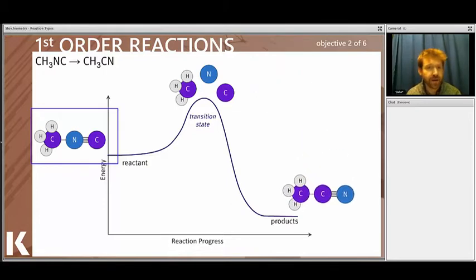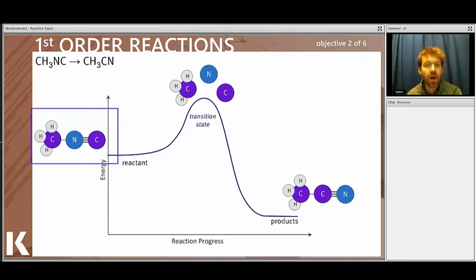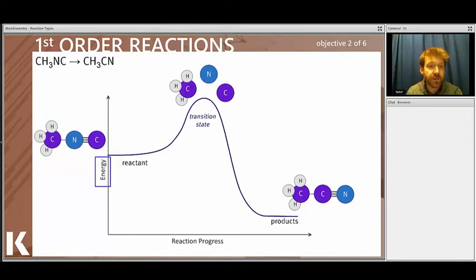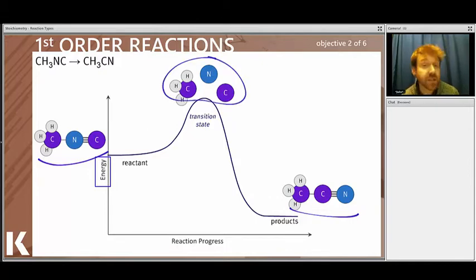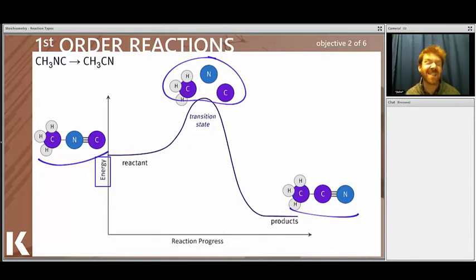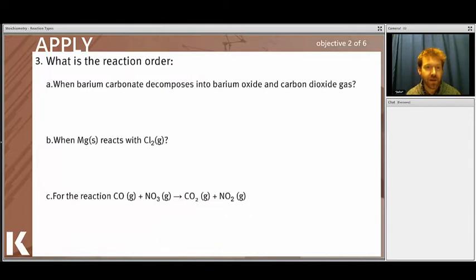Next example: a single molecule rearranges to form a new product. Since there is only one reactant, this is a first-order reaction. Looking at the energy diagram, the y-axis represents energy. When atoms are bound together it's lower energy; during the reshuffling there's a high-energy transition state at the peak, after which the rearranged product is formed.